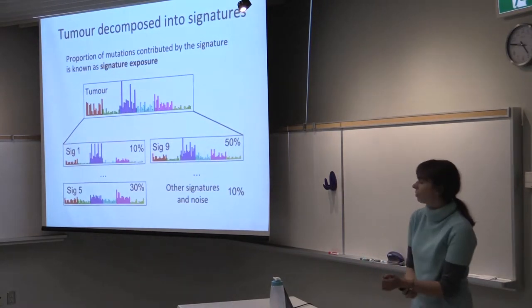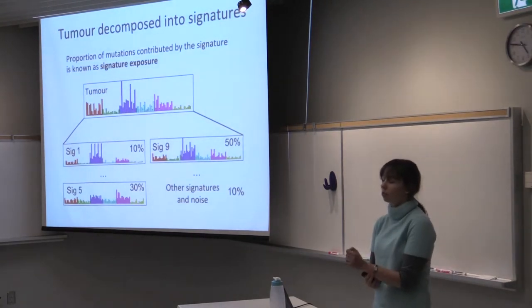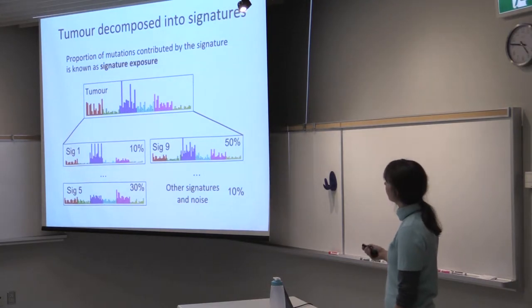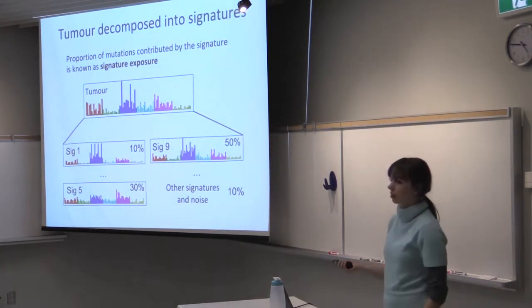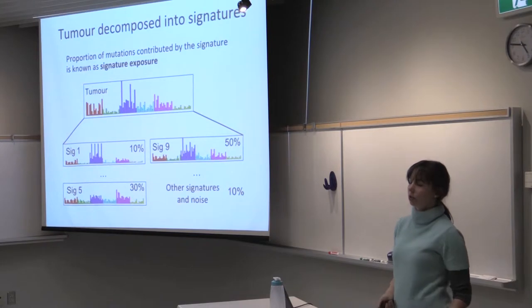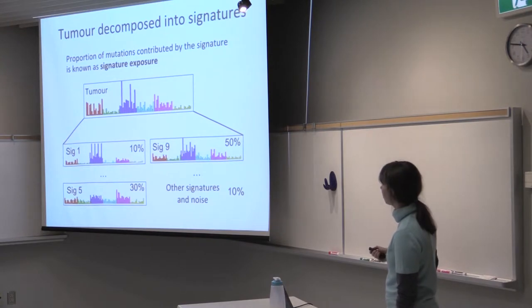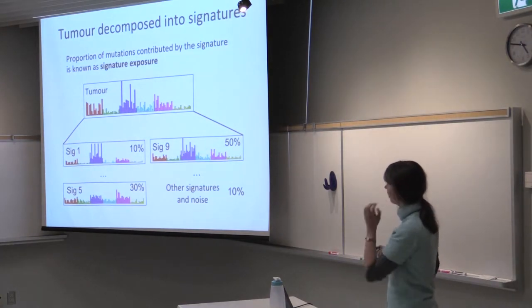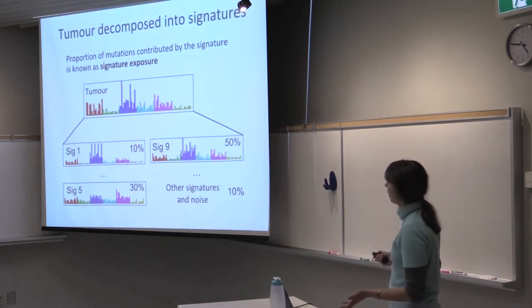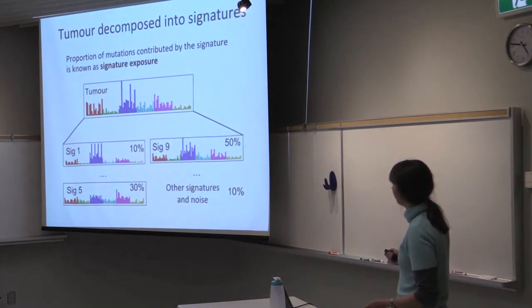And using models such as mixture of multinomials, we can actually compute the proportion of mutations that were contributed by each mutation signature. And we'll call those signature exposures. So we represent the mutations in the tumor as a histogram, and then we can infer that, for example, 10% of mutations in this tumor were created by signature 1, or 50% were created by signature N.